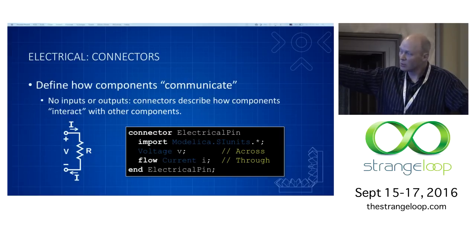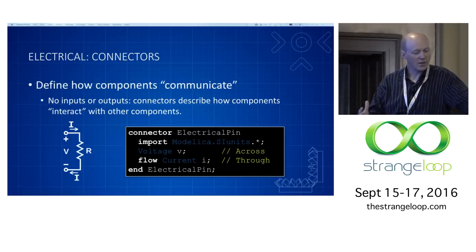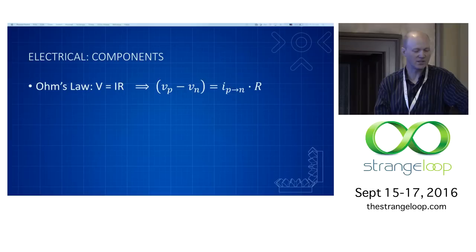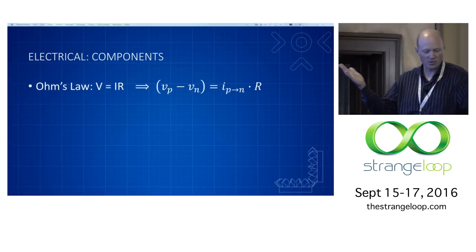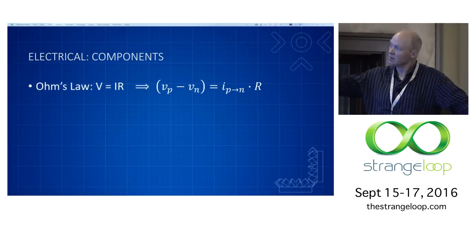Given a resistor, we would generally think of a resistor as having two ends. We can just arbitrarily call one the positive end and one the negative end. What we do in Modelica is for electrical components, we define this connector. The connector says that there are two pieces of information that we're going to associate with each end of this resistor. There's going to be a voltage at that point and there's going to be a current that's flowing through the wire at that point. The fact that current flows through the element is indicated by the fact that there's a flow qualifier in front of it.